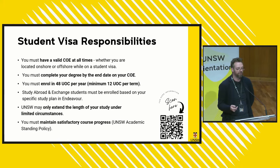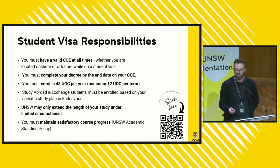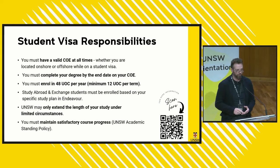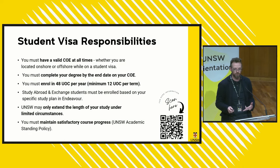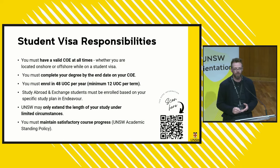You need to enrol in what's called a full load of study as an international student visa holder — that works out as being 48 units of credit each year. Typically one course is six units of credit, so you have to take eight courses a year: three courses in your first term, then another three courses, and then two courses in the third term. The minimum you can be enrolled in to be compliant with a full load of study is 12 units of credit in one standard study period.